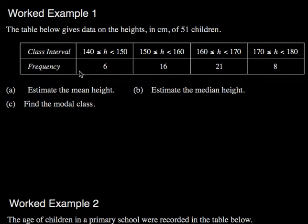This video we're working with grouped data, and grouped data means that we don't know exactly what these numbers are, but there are six numbers, six different heights, that are between 140 and 150. The symbols here mean that it does include 140, but it does not include 150, because if someone was 150, they would be in this interval.